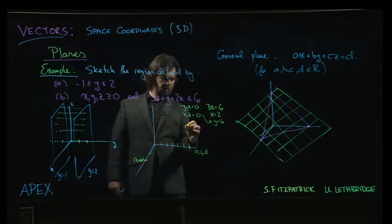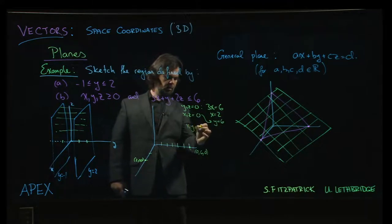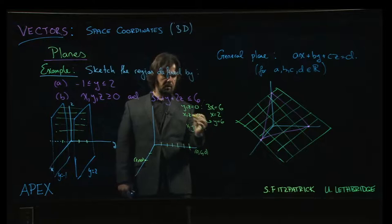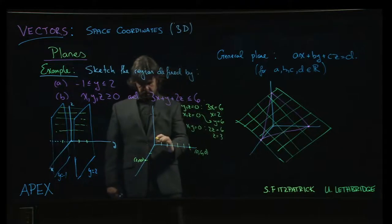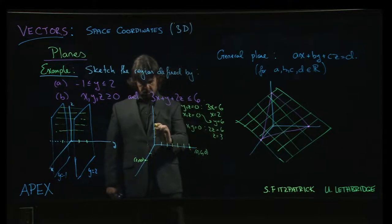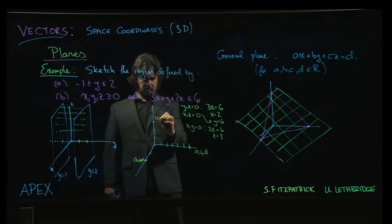And if I put x and y equal to 0, I'm going to get 2z equals 6. So z is equal to 3. So 1, 2, 3. So there's 0, 0, 3.